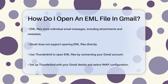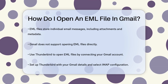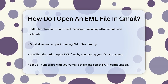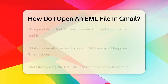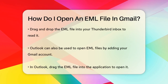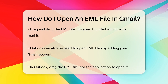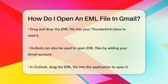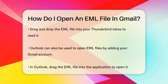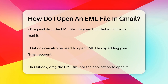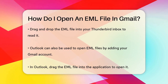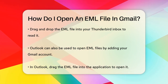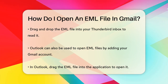One way to open an EML file in Gmail is by using another email client like Thunderbird or Outlook. For example, you can connect your Gmail account to Thunderbird. Start by entering your Gmail details in the Account Setup tab, select IMAP Configuration, and allow Thunderbird to access your Gmail account. Once connected, you can drag and drop the EML file into your Thunderbird inbox, and it will appear as an email that you can open and read.